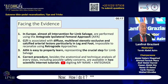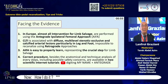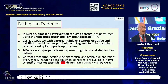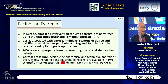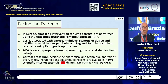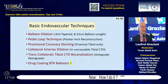The evidence shows that in Europe, almost all interventions for limb salvage are performed using the antegrade ipsilateral femoral approach. Critical limb ischemia is associated with diffuse multi-level stenotic occlusion and calcified lesions, particularly in leg and foot arteries — impossible to recanalize using retrograde approaches. The antegrade ipsilateral femoral approach is easy to learn and represents the crucial step for limb salvage. Correct procedural steps, including safety concerns, are available in scientific internet tutorials.